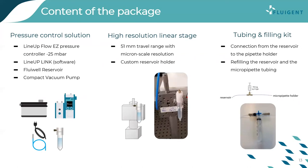Looking at the package in detail: it includes a pressure control solution — the LineUp FlowEasy pressure controller with negative flow control, ranging from zero to minus 25 millibar, allowing highly precise pressure control for micropipette aspiration. It also includes a Link module to connect the FlowEasy to software, plus a reservoir and vacuum pump to connect vacuum to the pressure controller for precise pressure control.